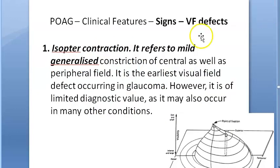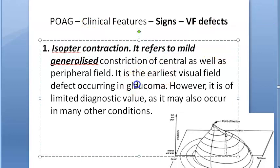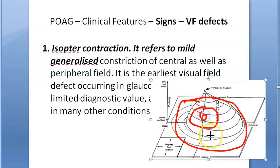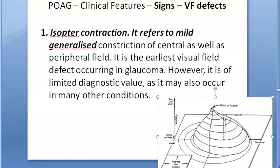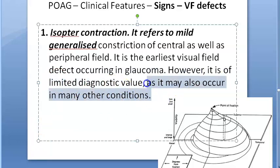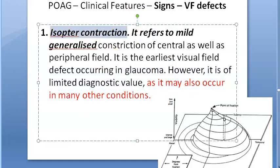First: isopter contraction — it refers to mild generalized constriction of both the central and peripheral field. This is the earliest visual field defect occurring in glaucoma; however, it has limited diagnostic value because it may also occur in other conditions. Remember: isopter contraction is non-specific to glaucoma.